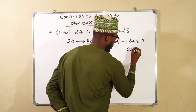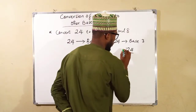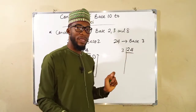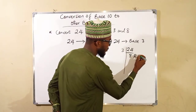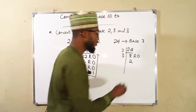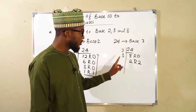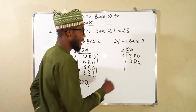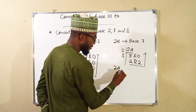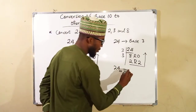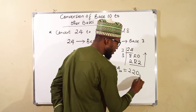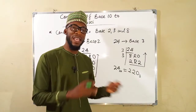We write 24 here, which is a number in base 10, and divide by 3. 3 can go into 24 eight times without remainder. 3 can go into 8 two times with remainder 2. 3 cannot go into 2, so we stop and take these numbers in their descending order. Therefore, 24 in base 10 is equal to 2 2 0 in base 3, and these two are exactly the same.